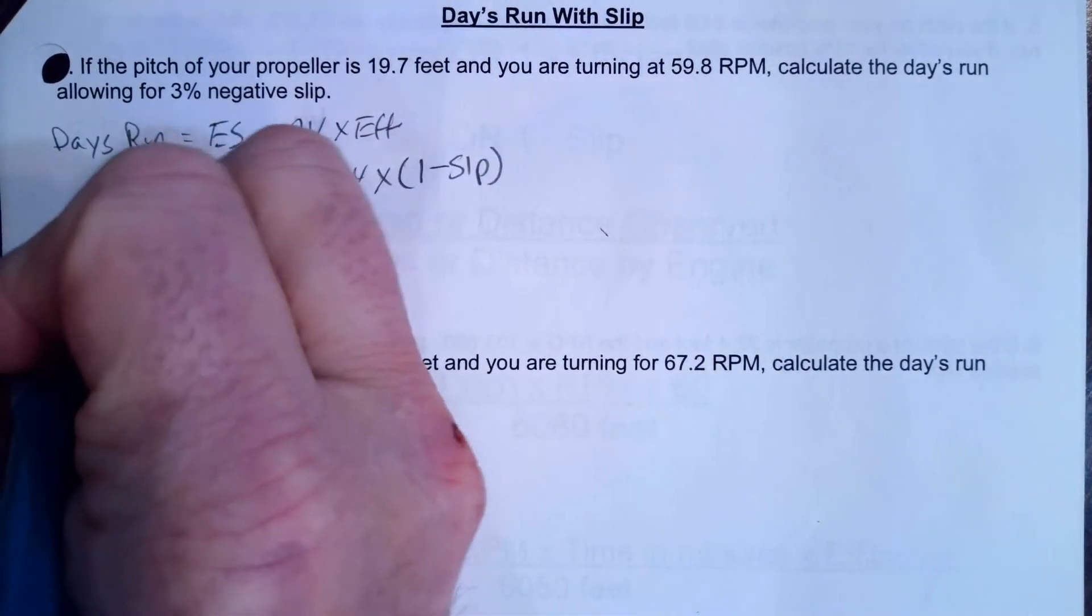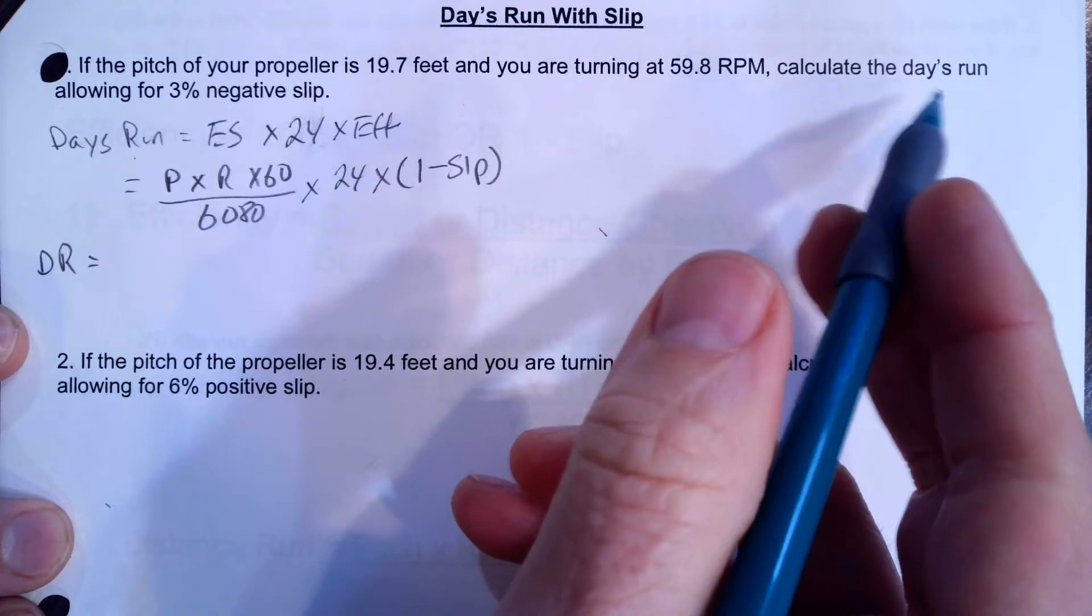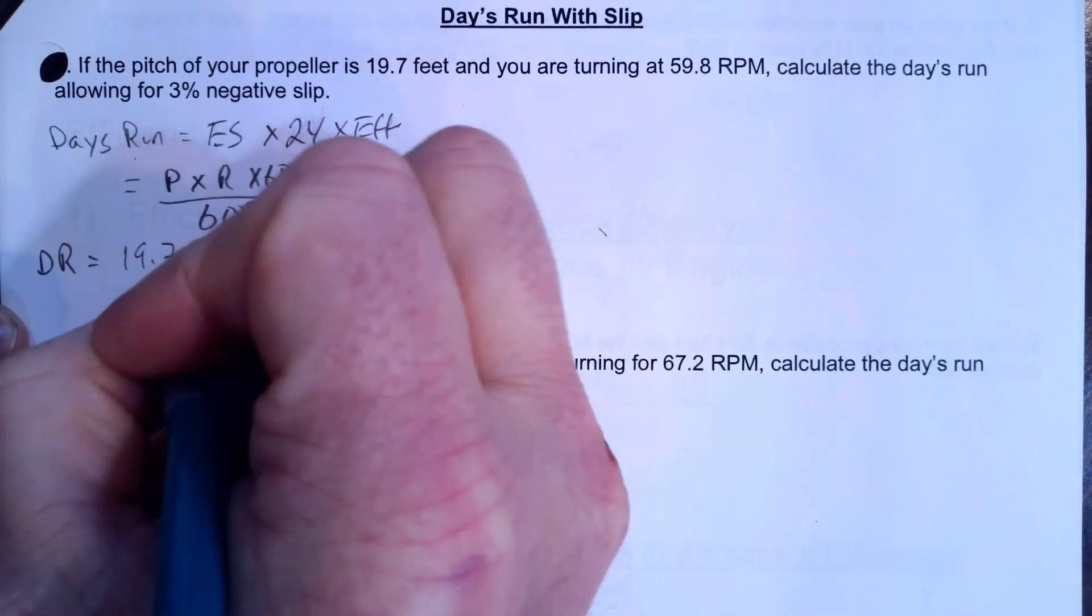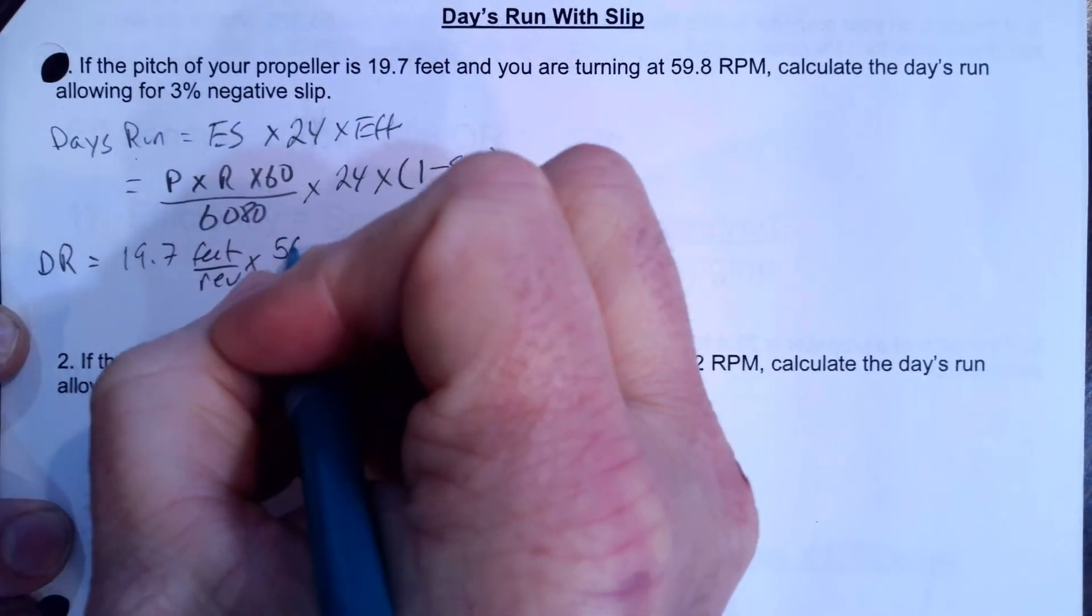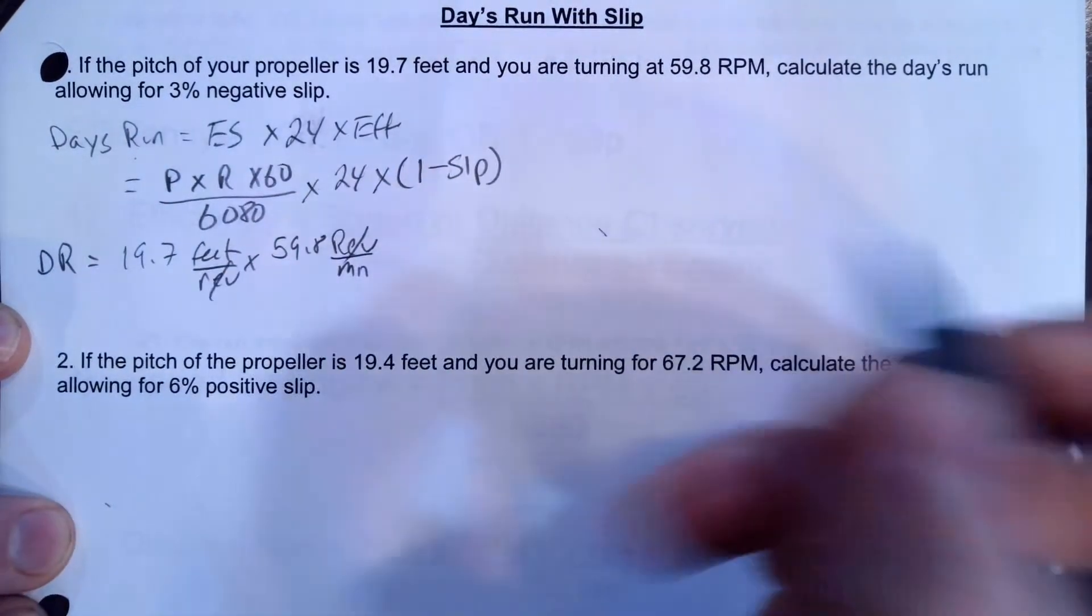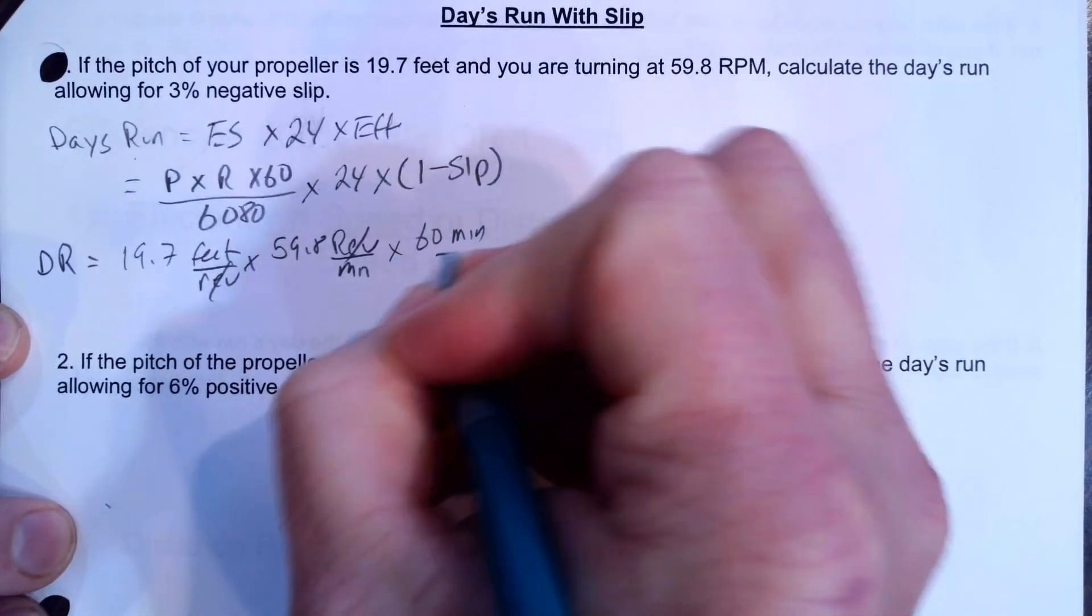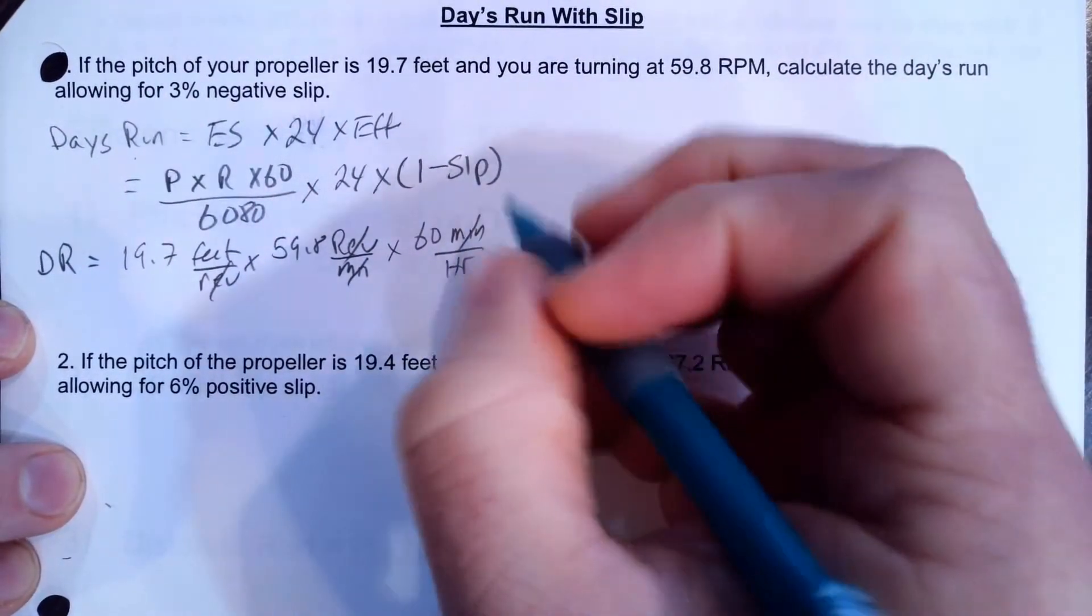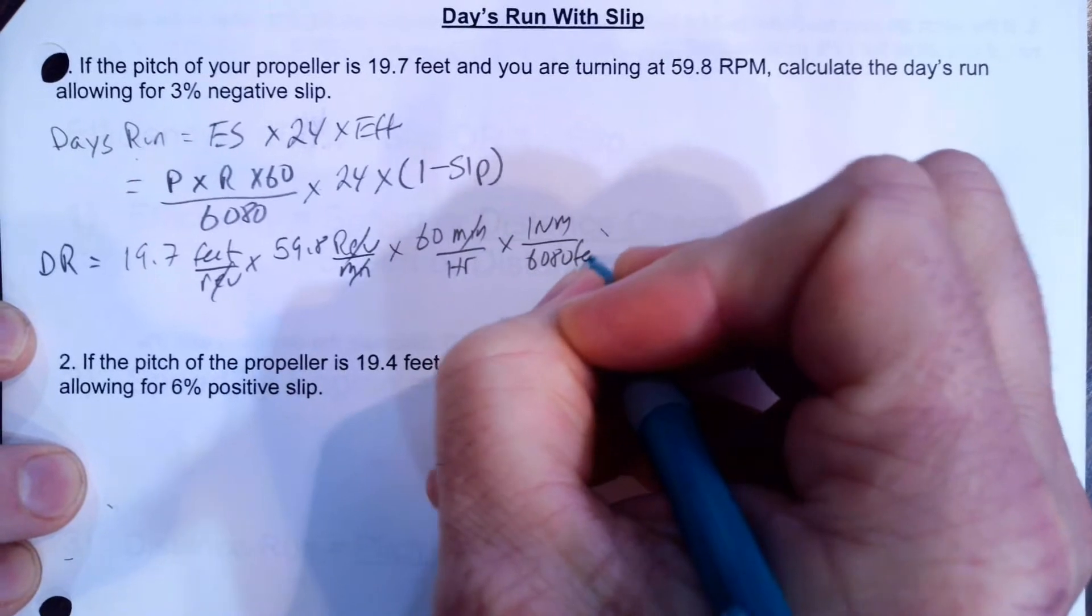So our day's run is going to equal our pitch. And as I do this, I'm going to put all the units in there, and you'll see how everything cancels out. So our pitch is 19.7 feet per revolution times our RPM, which is 59.8 revolutions per minute. And now I'm going to multiply that times 60 minutes per hour, which I need to do because I need to get my hour units. Then I'm going to multiply that by one nautical mile for every 6,080 feet.